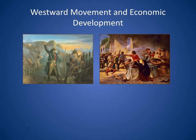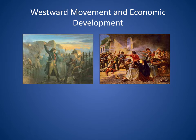With westward movement and economic development, you have American migration into Texas, which led to an armed revolt against Mexican rule and a famous battle at the Alamo. A band of Texans fought to the last man against a hugely superior force, and they lost. But their eventual victory over the Mexican forces brought Texas into the Union — first as its own country, then it became a state. That's why it's called the Lone Star State.